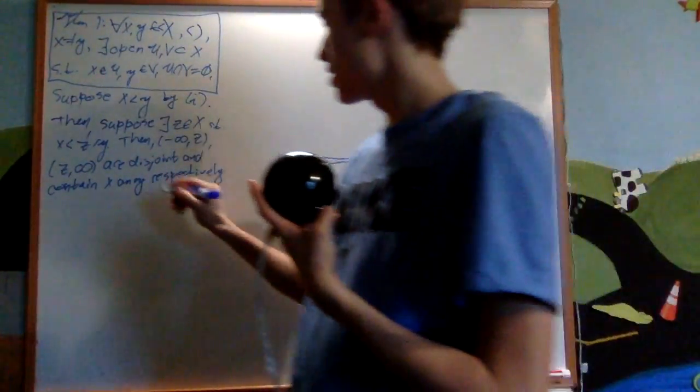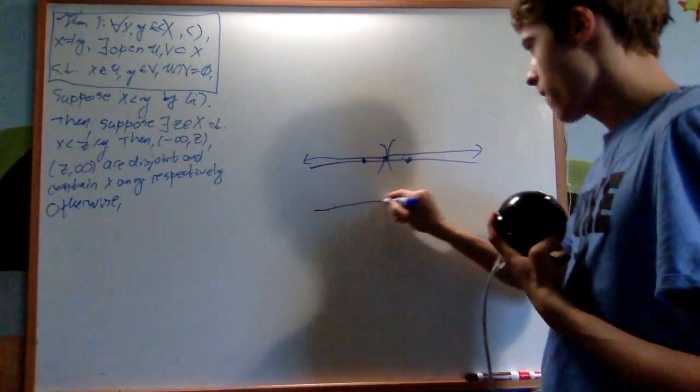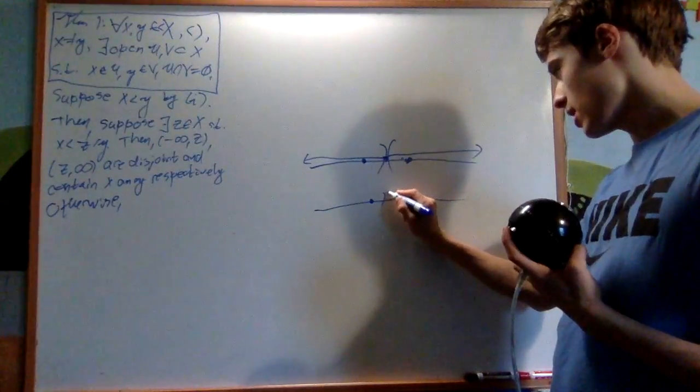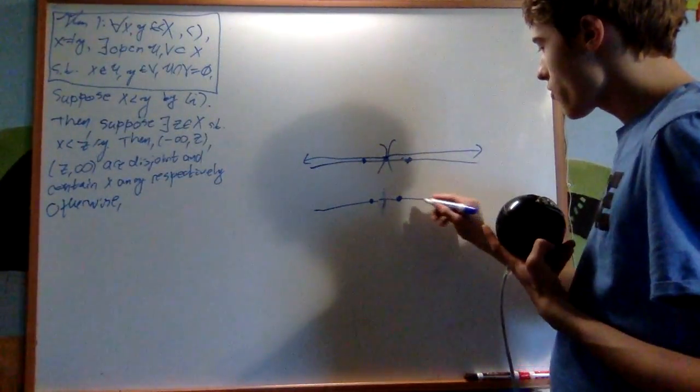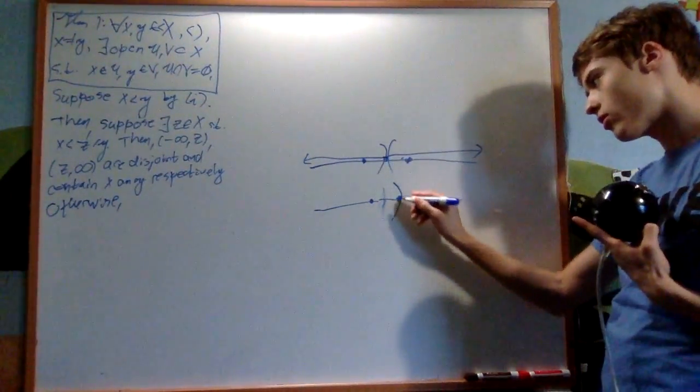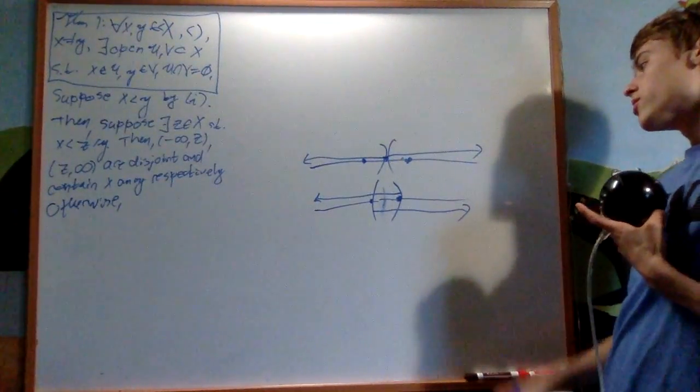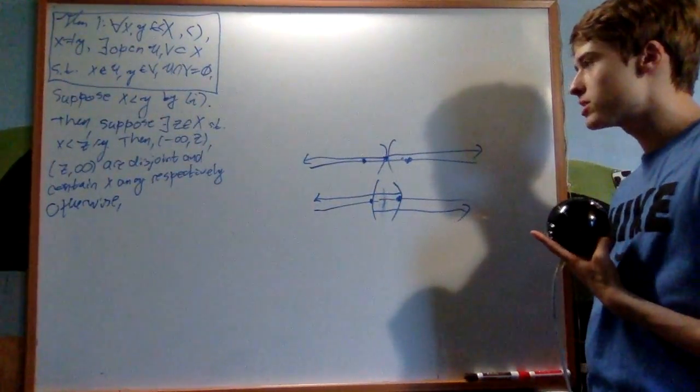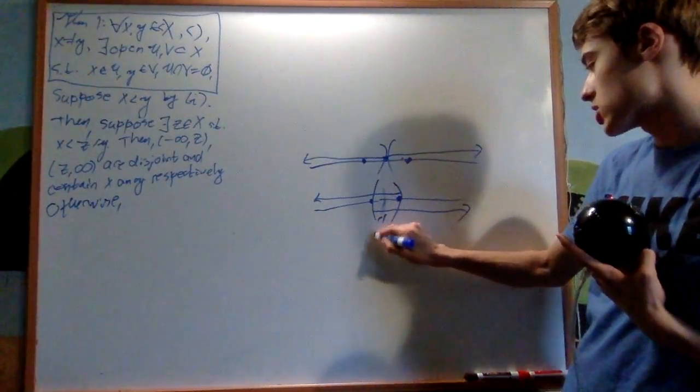But now suppose that there was no z there. Otherwise, so if there was no thing in between x and y, how on earth could I do this? I cannot split it in between the two. So what might seem unintuitive but actually works is that we do this interval that takes you from there to there and this interval that goes this way. Now the reason why is because the intersection of these two would have to be in between x and y, but as we discussed there is none. So their intersection, even though it might not look like it in this diagram, is actually empty.